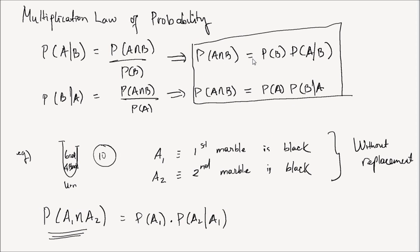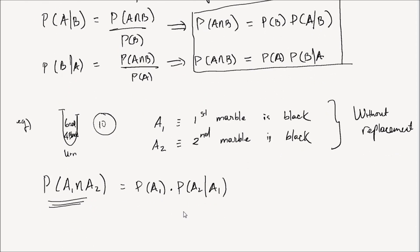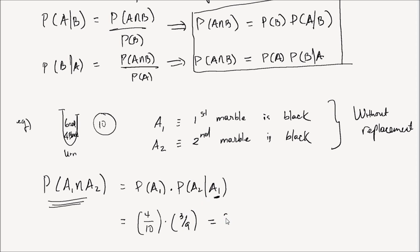What is the probability of drawing a black in the first draw and a black in the second draw? Using the multiplication law: P(A1 intersection A2) = P(A1) × P(A2|A1). P(A1) = 4/10 since there are ten marbles, four of which are black. Since we draw without replacement, in the second round there are nine marbles left, and given the first was black, only three are black. So P(A2|A1) = 3/9, giving P(A1 intersection A2) = (4/10) × (3/9) = 2/15.